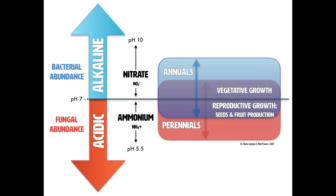In that pH swing I keep talking about — micrometer to micrometer, 4 to 9 — we see there are ample amounts of nitrate and ammonium along these gradients when biology is present and able to fix nitrogen.